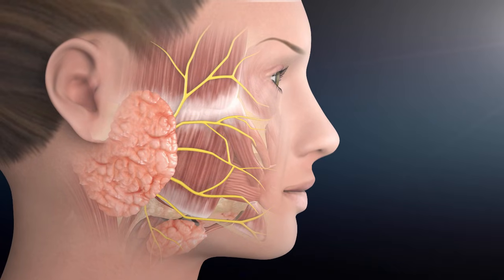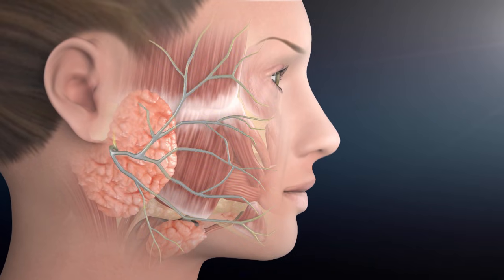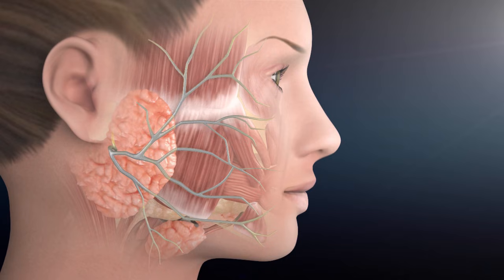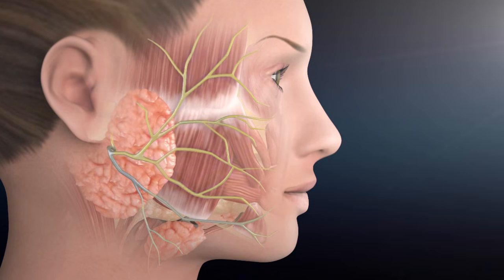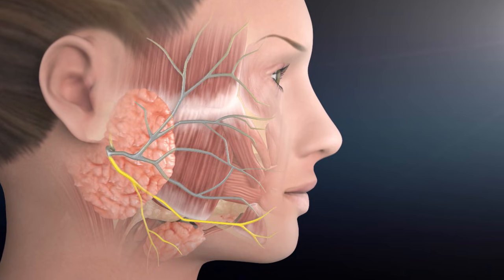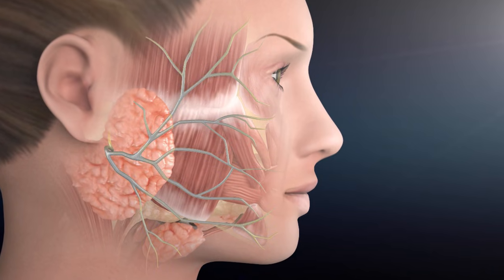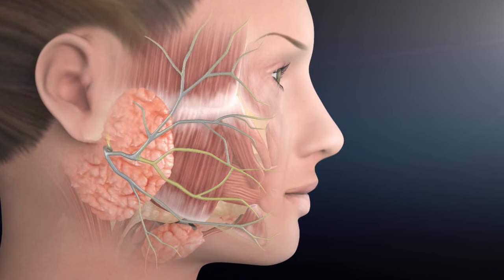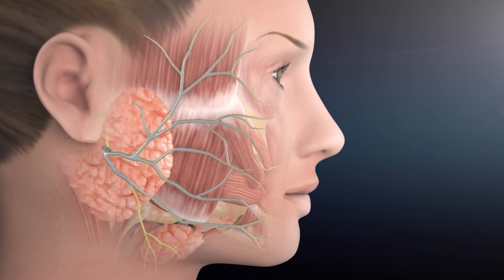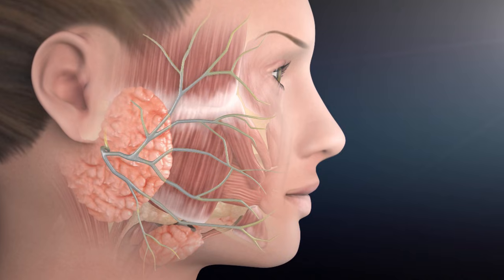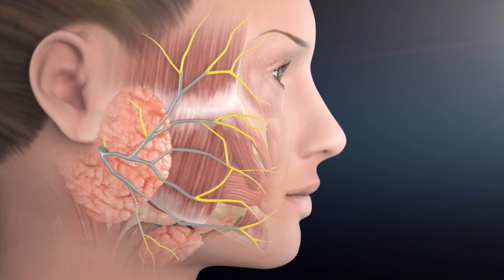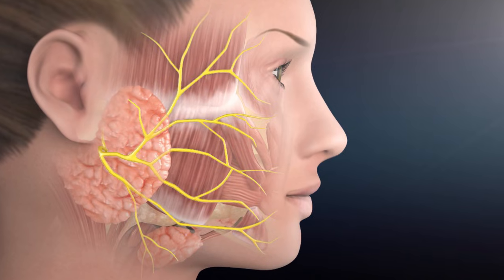Once the facial nerve enters the parotid gland, it generally divides into two main branches called upper and lower divisions, and then into five other branches which then subdivide into many smaller branches that connect to the facial muscles.